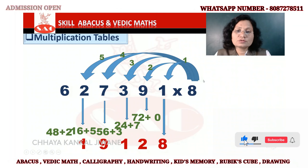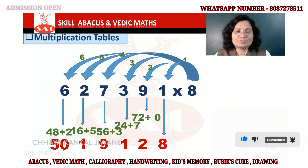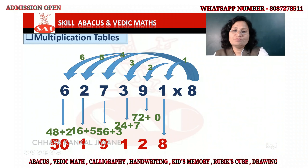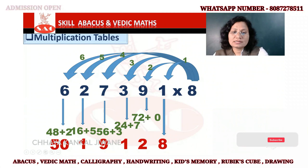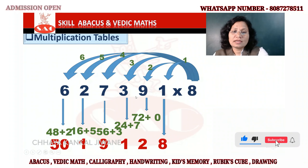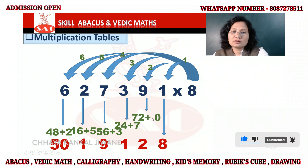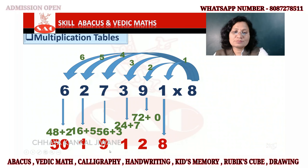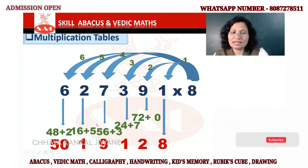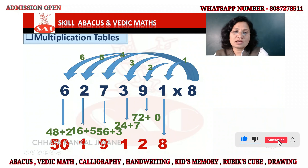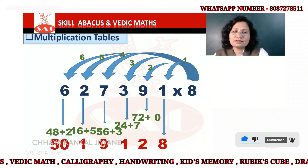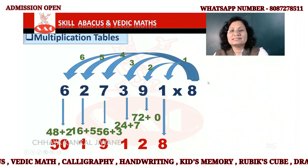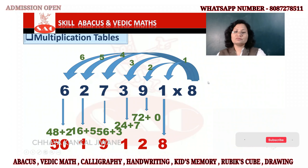8 × 6 = 48, plus 2 = 50, write 5 0. Answer is 5 0 1 9 1 2 8. Now once more: 8 × 1 = 8, 8 × 9 = 72, 2 here, 7 is the remainder. 8 × 3 = 24, plus 7 = 31, 1 here, 3 is the remainder. Then 8 × 7 = 56, plus 3 = 59, 9 here, 5 is the remainder. Then 8 × 2 = 16, plus 5 = 21, 1 here, 2 is the remainder. Then 8 × 6 = 48, plus 2 = 50. So 5 0 1 9 1 2 8 is the answer.